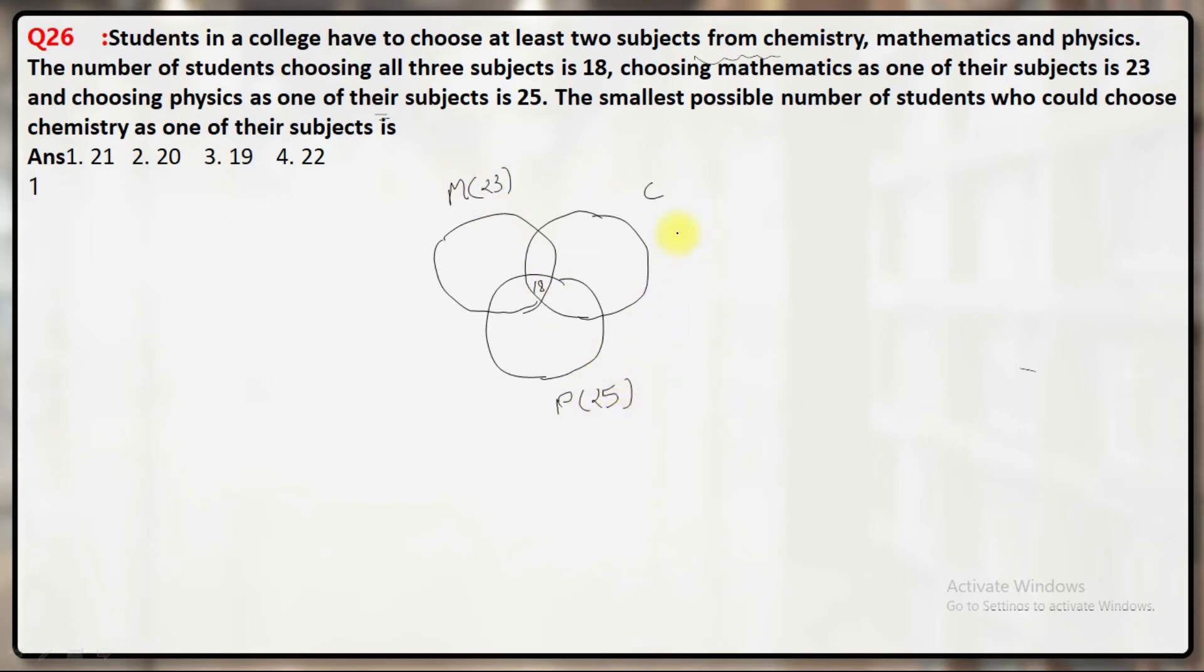Then the smallest possible number of students who could choose chemistry as one of their subjects is what we need to find.